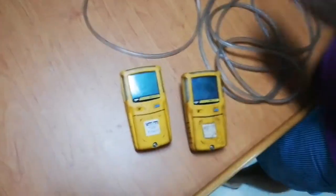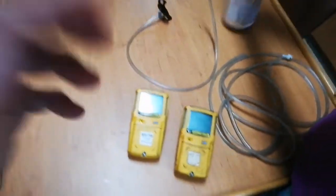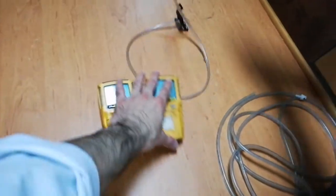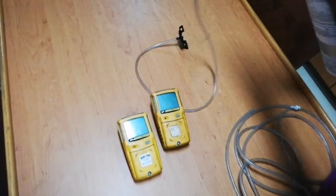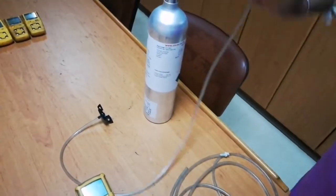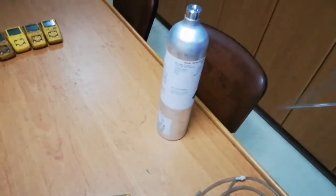Last time I showed you how to do the calibration test on the Gas Alert Micro Clip XL model. This Gas Alert Max XT model is a little bit different from the previous model because it has an inbuilt air motor.